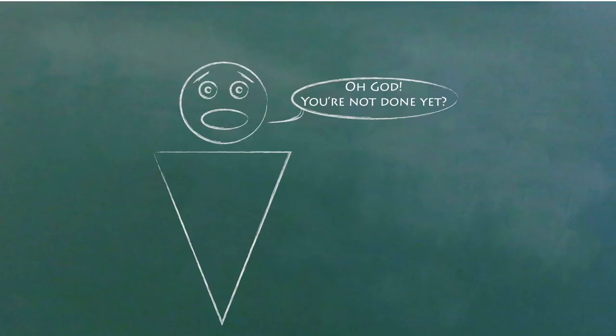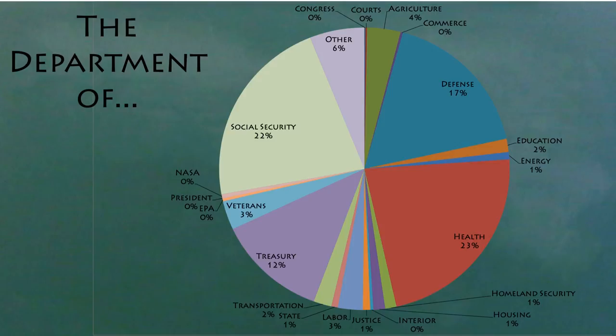Another way to break down spending is to count how much gets spent by the different major federal agencies. This is what the breakdown of the whole budget looks by agency. As you can see, a lot of the agencies get less than a percent of the total.